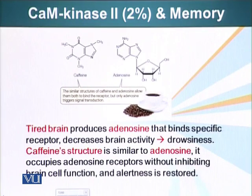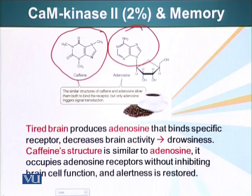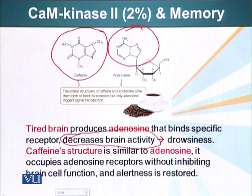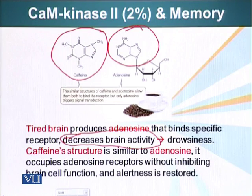Another thing we do to our nervous system — sort of a little bit of abuse perhaps — we subject it to caffeine. Caffeine has a structure similar to adenosine. Adenosine is produced by neurons once the neurons get tired. Adenosine binds specific receptors on specific cells of the brain, which results in decreased brain activity, causing drowsiness and sleep. So when we want to stay alert because we have an exam or an assignment due, we drink coffee or caffeine. That caffeine binds the adenosine receptors on the brain and prevents adenosine from binding those receptors.